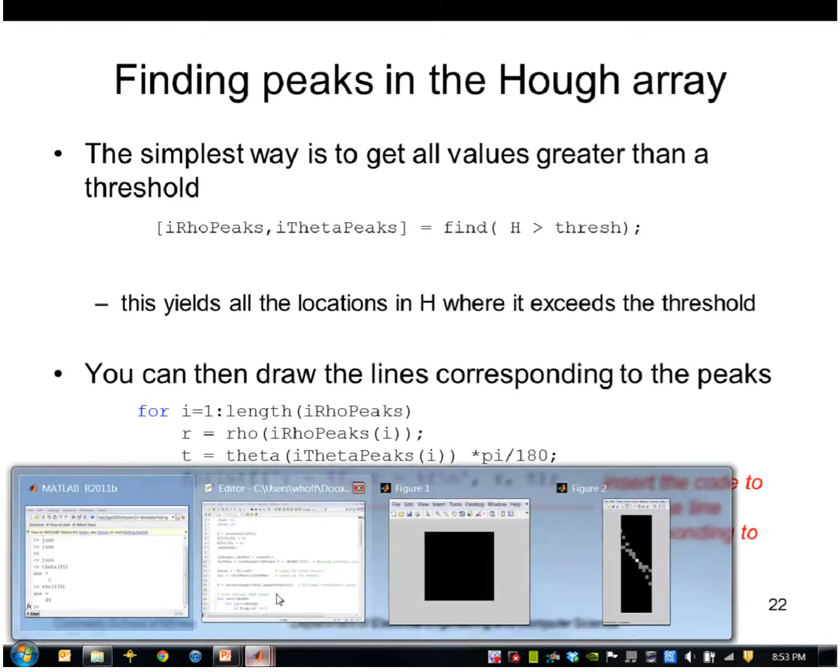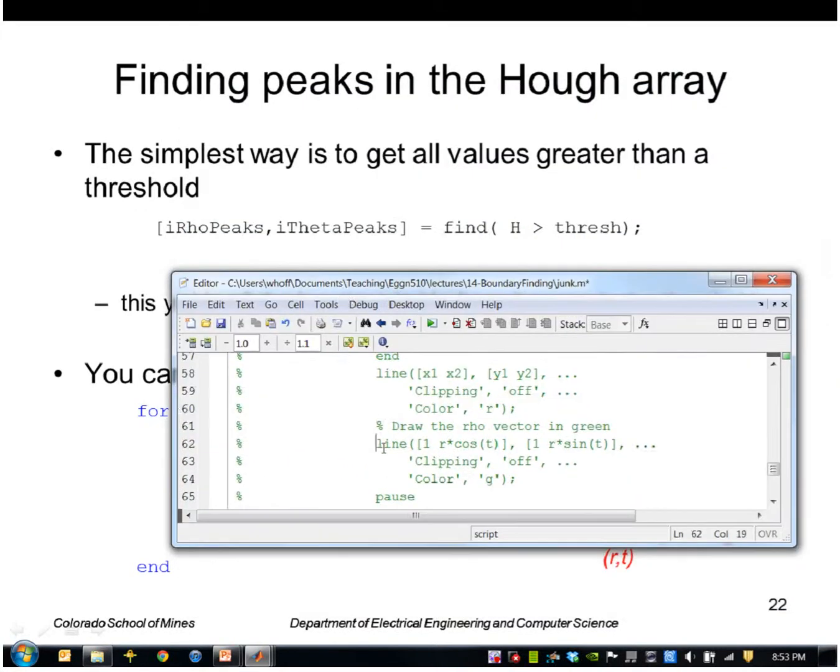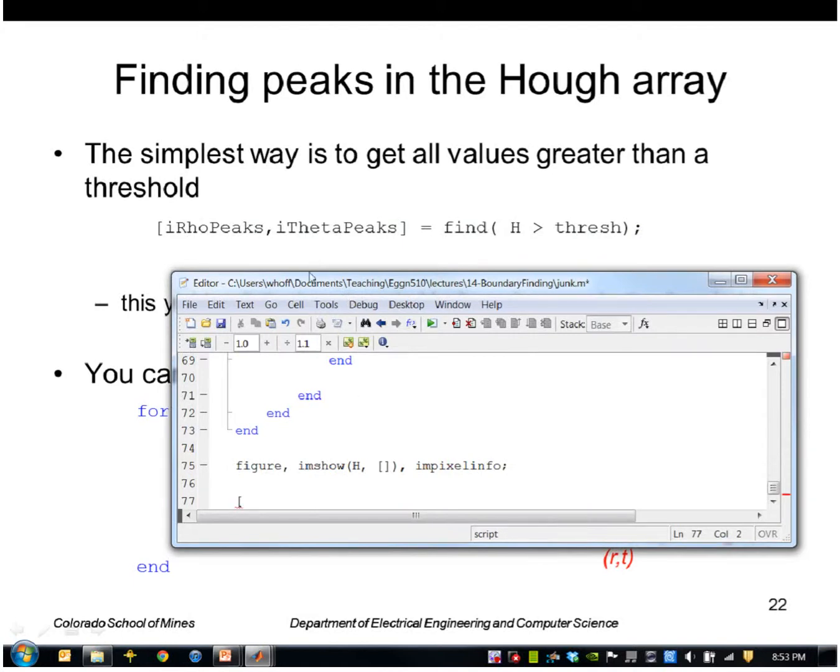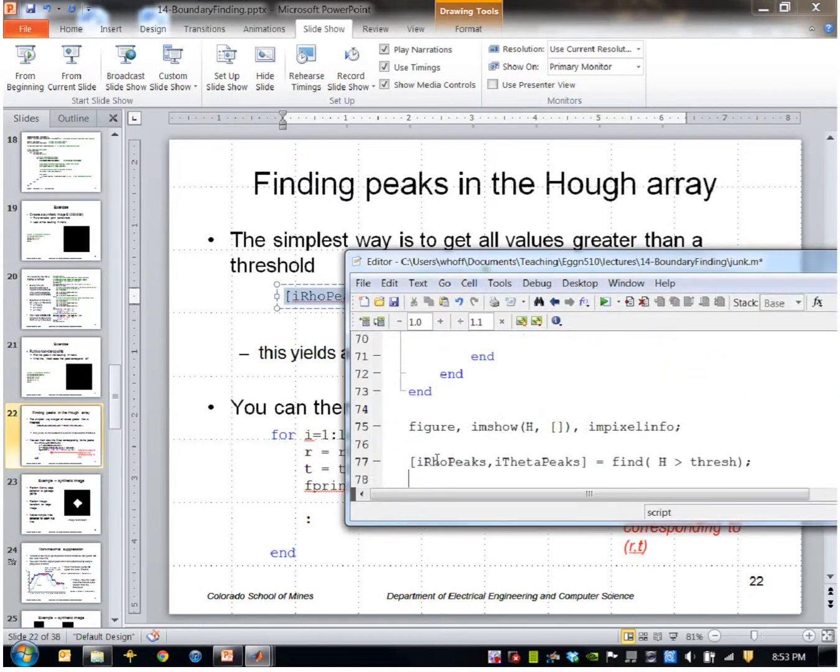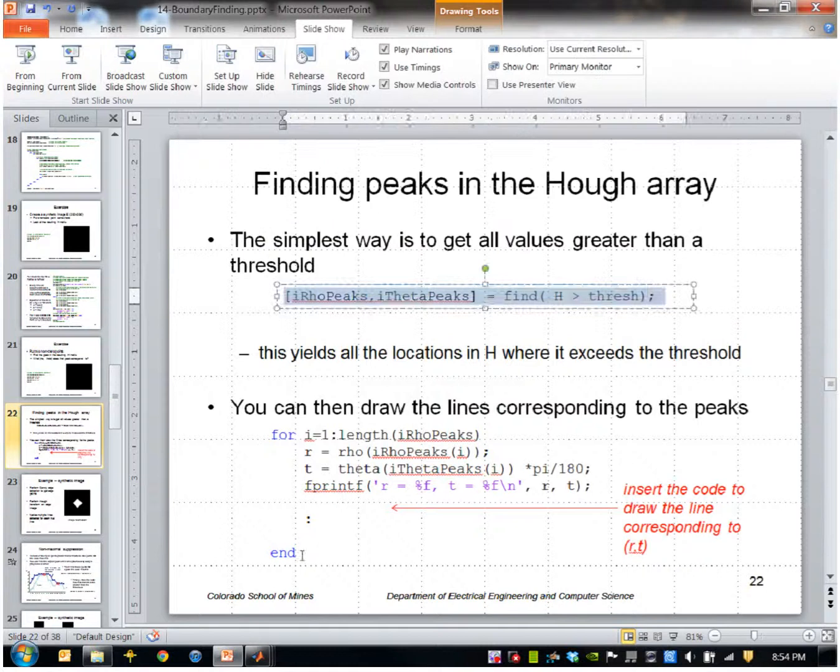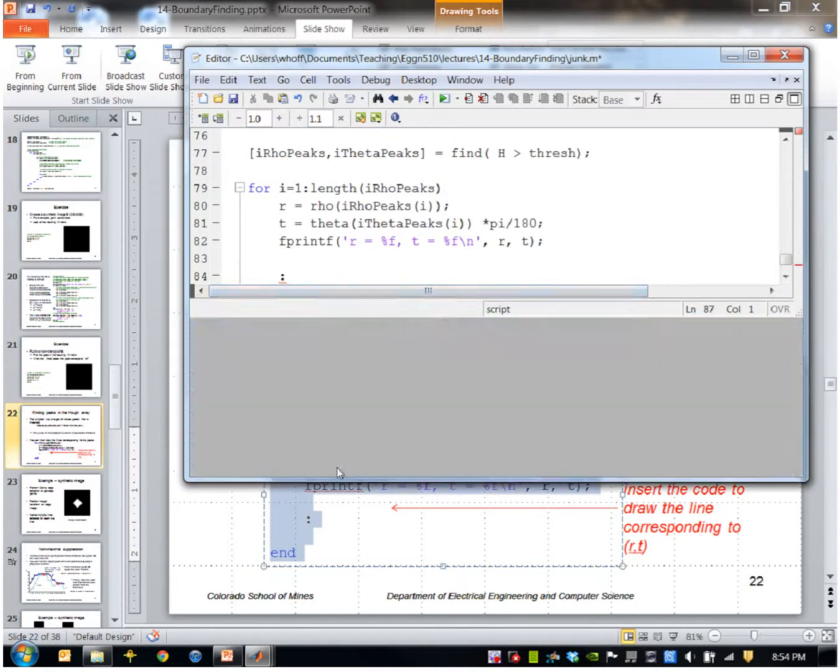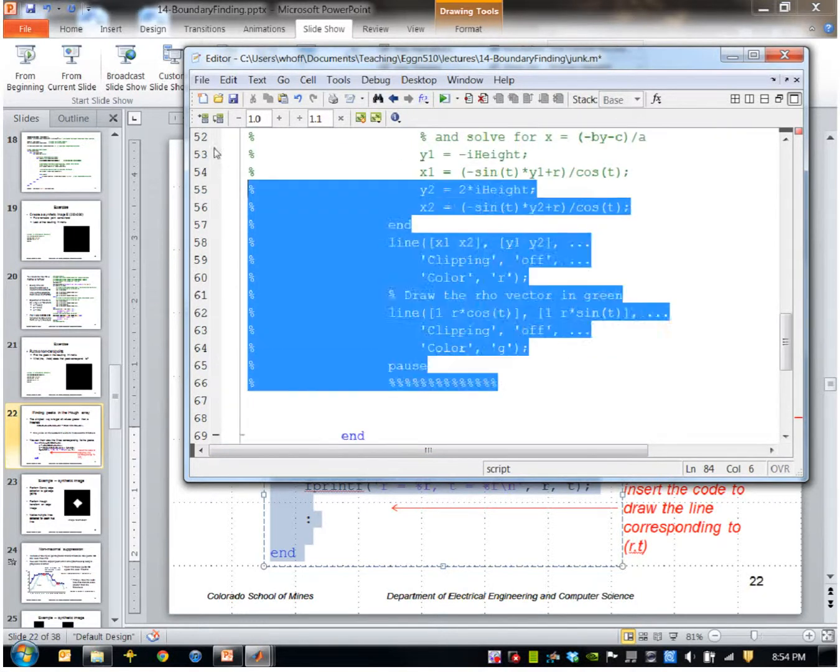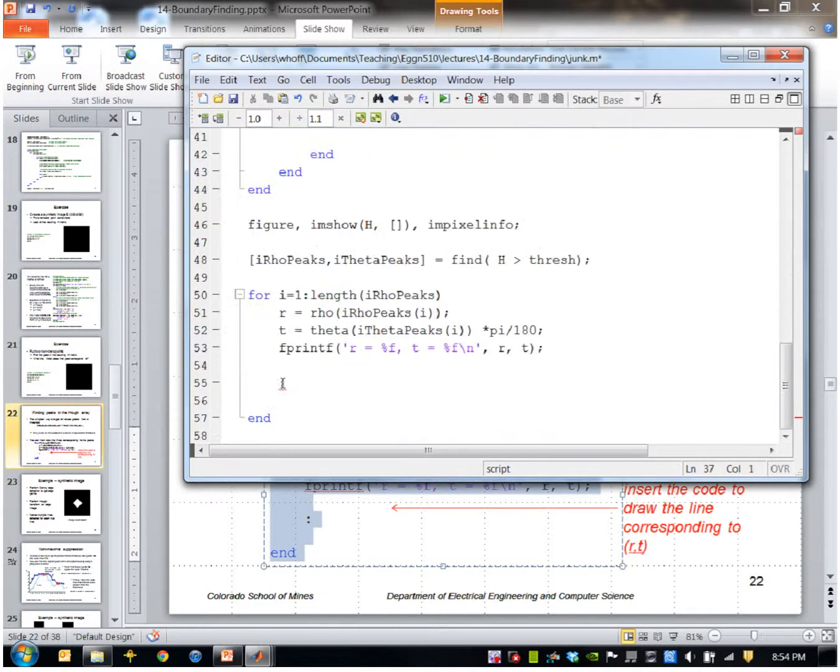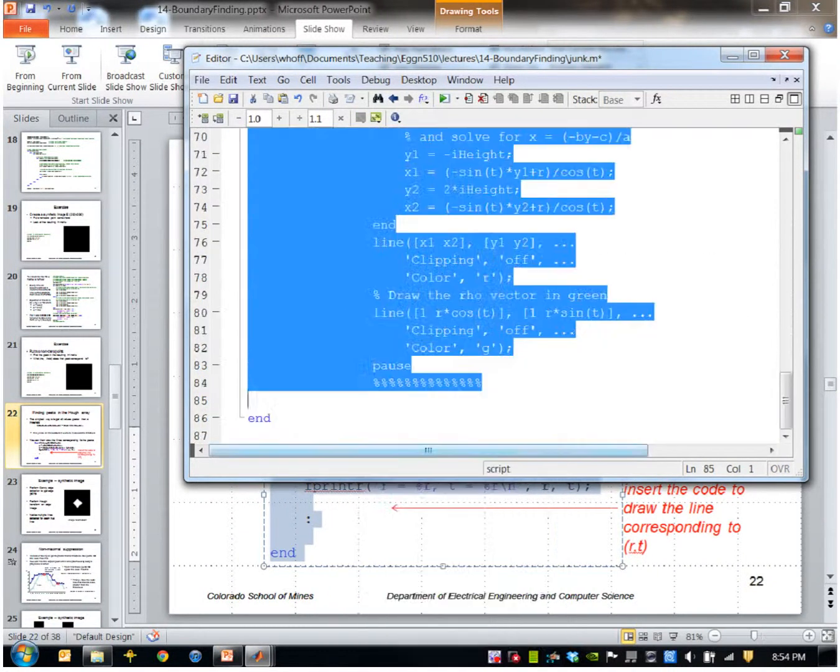And then we can go ahead and draw those corresponding lines. So I'll go ahead and put that in here. So down at the bottom, we'll say, let me just copy it. So there's my values. And then I'll copy this code, which draws the lines. And I said, insert the lines, the instructions that draw the line corresponding to R and T. So that was this code up here. I'll just copy that and move it down. I'll uncomment all of this. And again, I'll clean everything up.